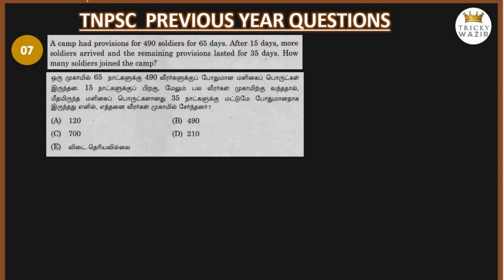First, the soldiers were provisioned for 65 days. After 15 days, the remaining days are 50. The number of soldiers is 490, and after more soldiers joined, the total becomes 490 plus X.